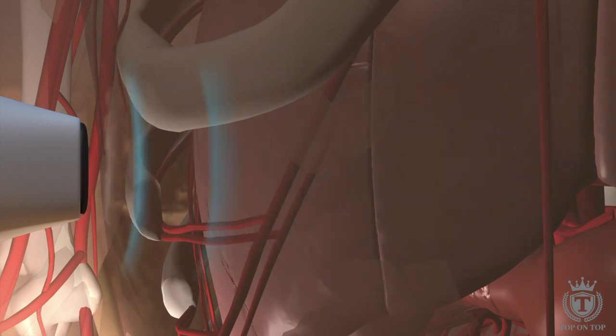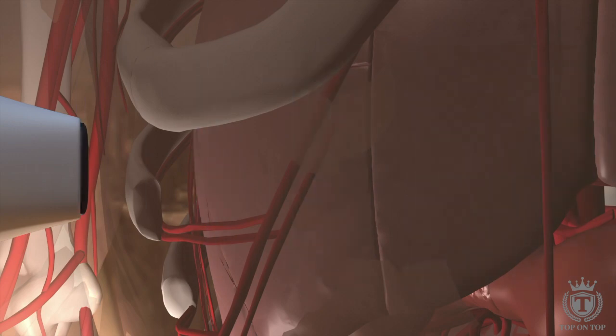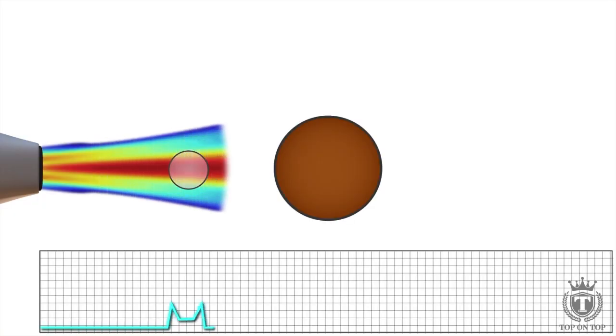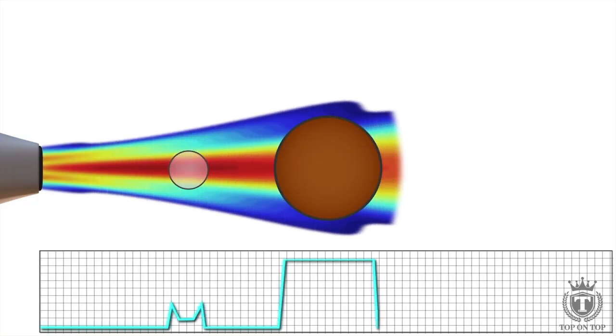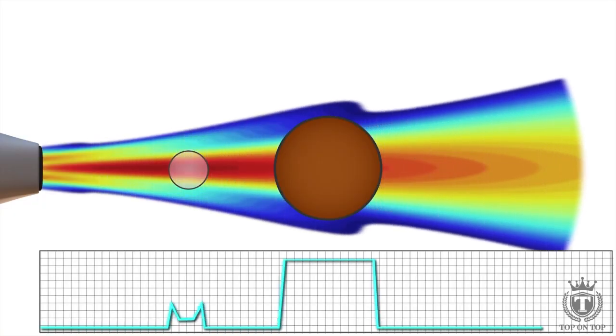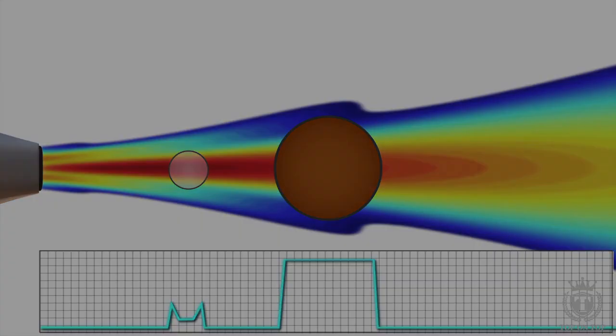This happens more than a thousand times a second. Returning echoes are converted to electric signals, which a computer converts into points of brightness on the image, corresponding to the anatomic position and the strength of the reflecting echoes.